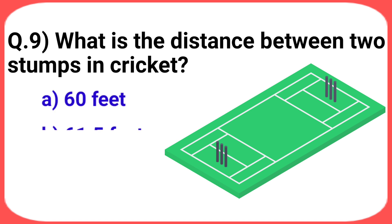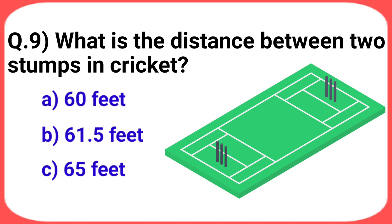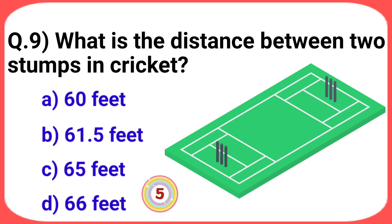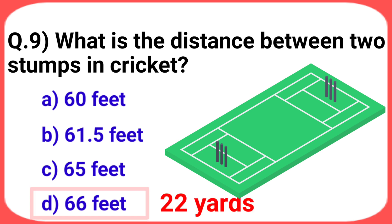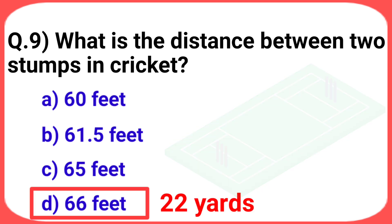Next question: what is the distance between two stumps in cricket? Your options are: a) 60 feet, b) 61.5 feet, c) 65 feet, d) 66 feet. The answer is option d: 66 feet.